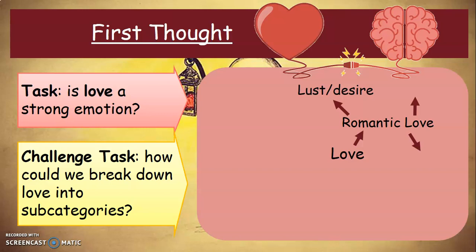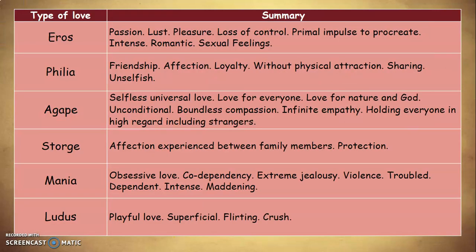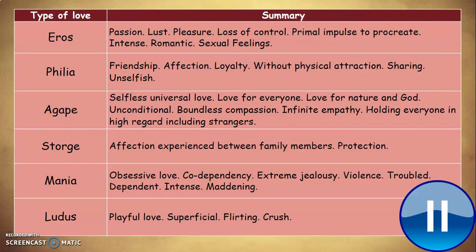Carrying on with your first four tasks: think about whether love is a strong emotion, then break down love into subcategories — I've given you an example. Pause the video to complete this task. There are a number of different forms of love here from Greek philosophy, giving you an idea of different types of love you could discuss and how they apply to Romeo and Juliet — we looked at this when we studied An Inspector Calls. Pause the video if you want to jot any of this down.